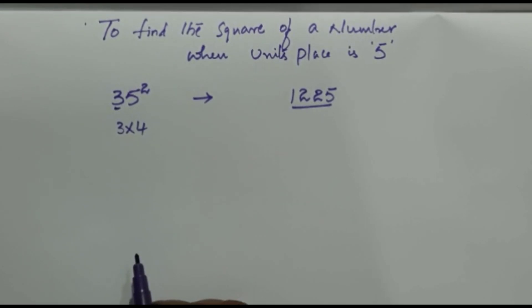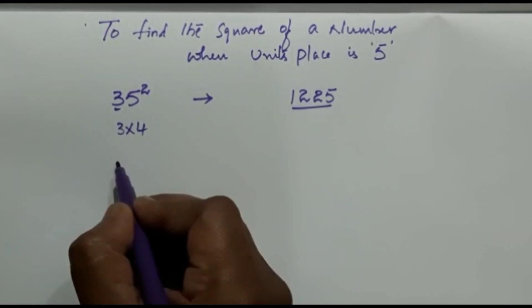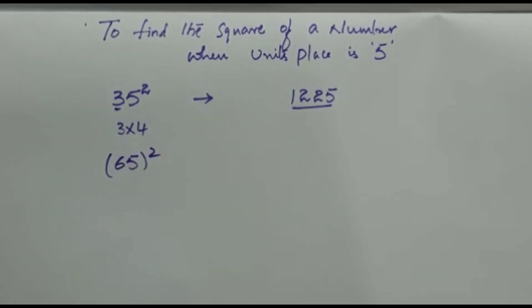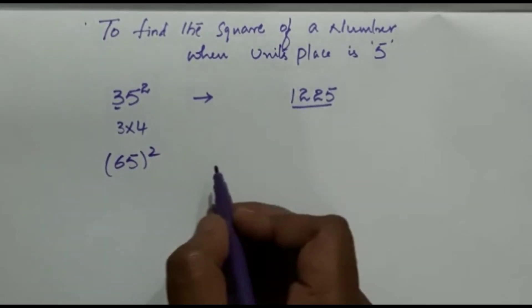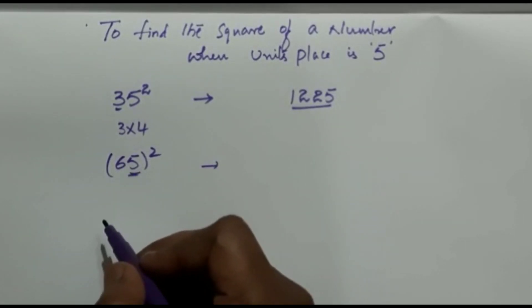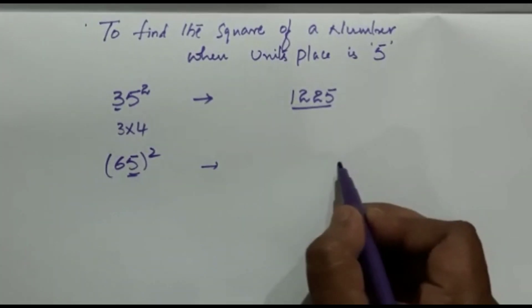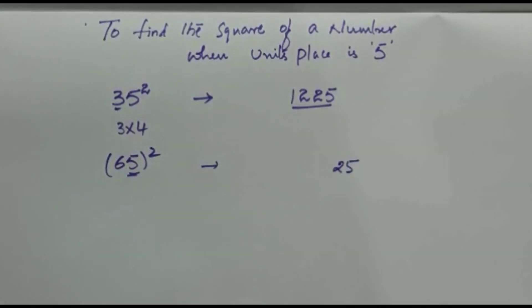Let us have one more example. For example, if the number is 65 and we have to find out the square of 65. Here see, since 5 is in the unit's place, therefore the last two places of the number will be 25.